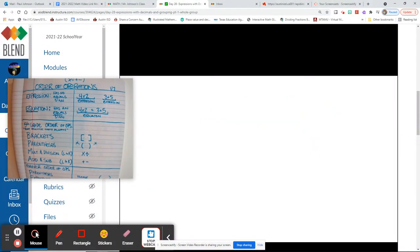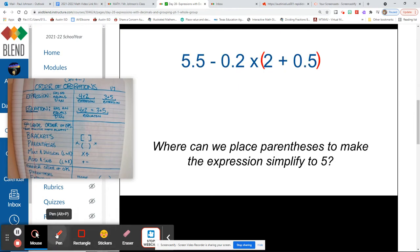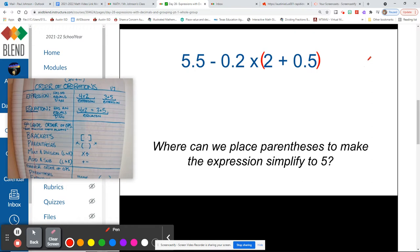So the first thing we're going to do is lose our problem, and then we're going to get it back. Okay, so first thing we're going to do is add 2 and 5 tenths.